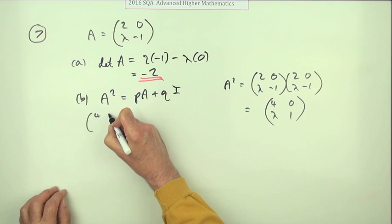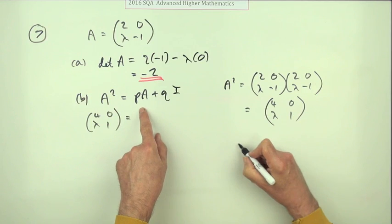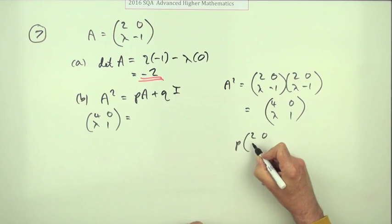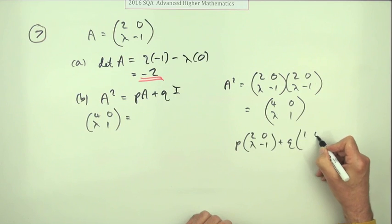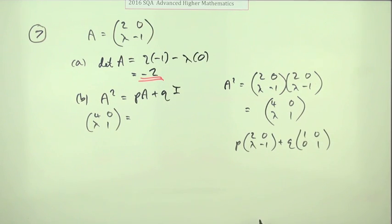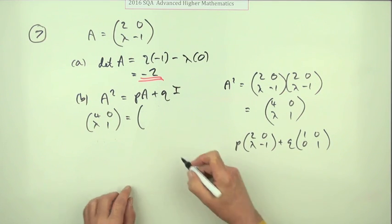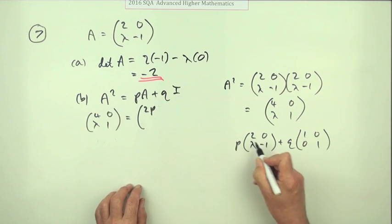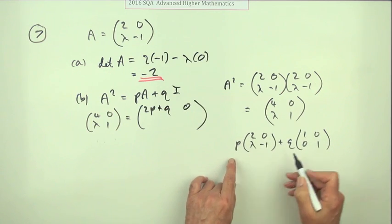So four zero lambda one, and that should equal p times A, which is two zero lambda negative one, plus q times I, the identity matrix with ones in the main diagonal.